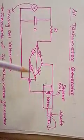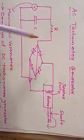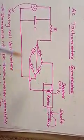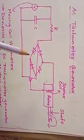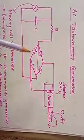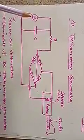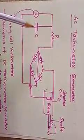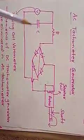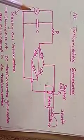This EMF is rectified by a bridge rectifier arrangement, which converts the AC voltage to DC voltage. This DC voltage is measured using the output voltmeter V. The capacitor is meant to remove unwanted ripple present in the output voltage. This is how the AC tachometer generator measures the output voltage, which is calibrated to indirectly measure the speed of the shaft.